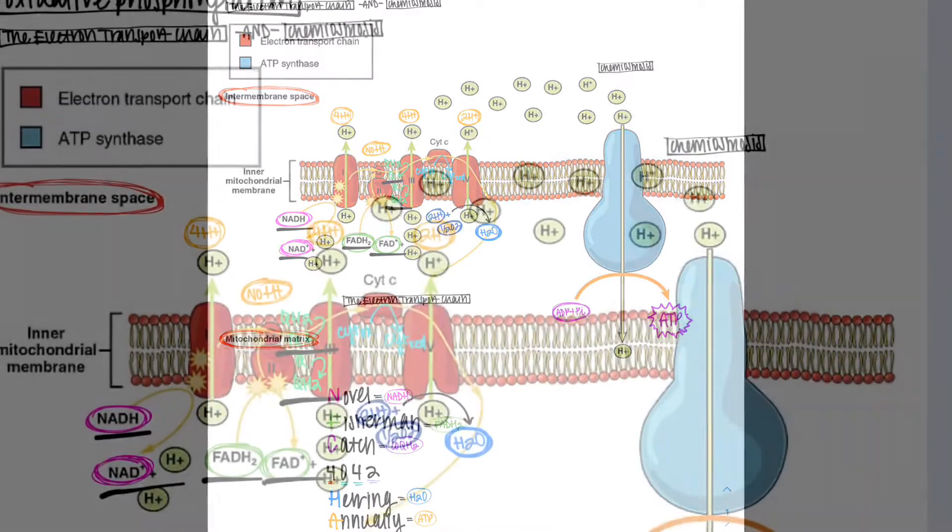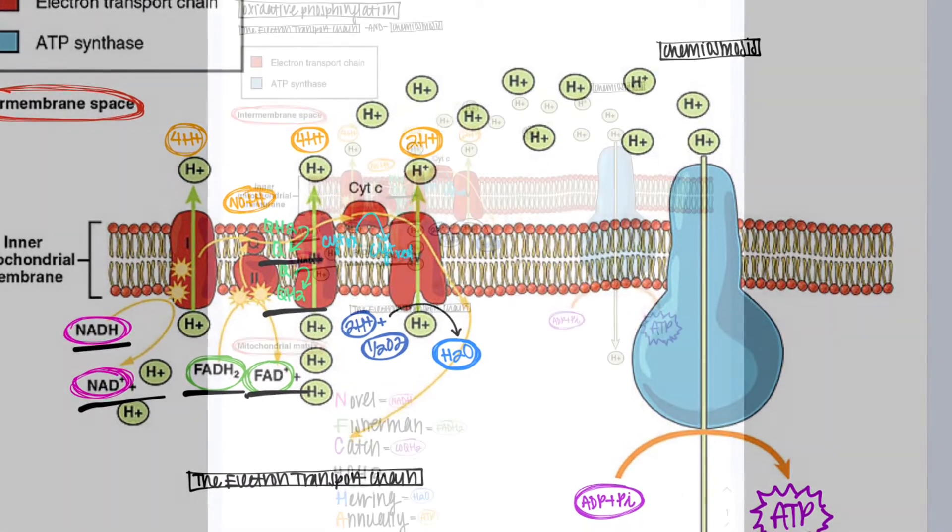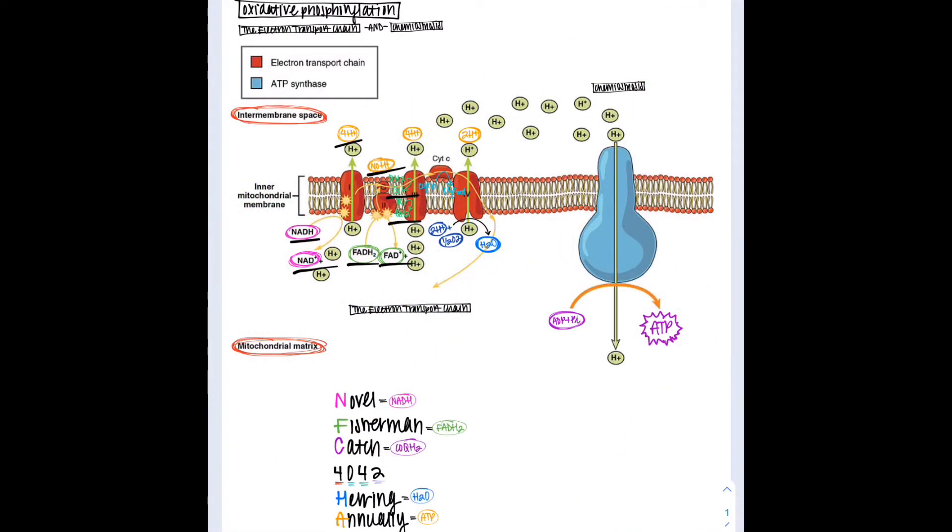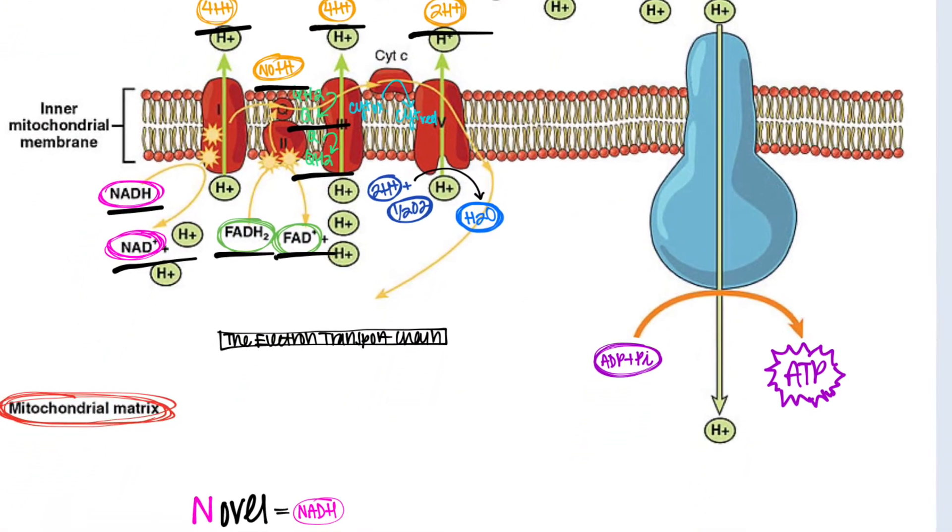The 4042 refers to how many protons are moving across in each complex: in complex 1, 4 protons move across; in complex 2, 0; in complex 3, 4; and in complex 4, 2.